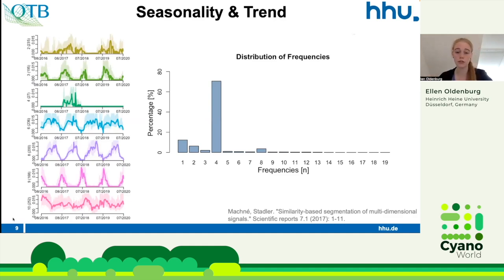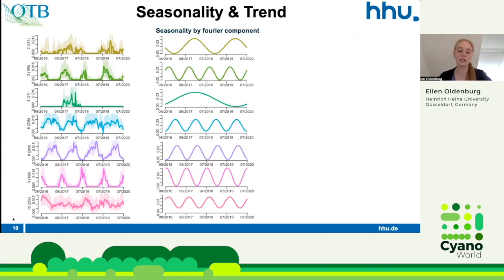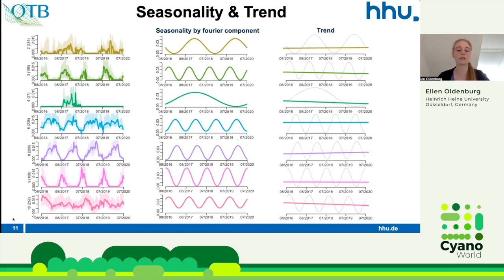On the right side, you can see that organisms had different frequencies, but most are at the full period because of the four years, so they recur each year. Here you can see the clusters that emerged over the entire four-year dataset, as well as the seasonality shown with the help of the first Fourier component. The trend was calculated by simple regression over seasonality, and it shows whether these clusters may decrease in the future or show an increasing trend.